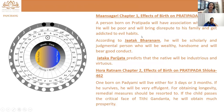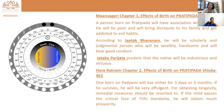Let us see what the classical texts have to say about a person born on Pratipada. Mangsari chapter 1 says a person born on Pratipada will have associations with rose — he will be poor, bring disrepute to his family, and get addicted to evil habits. Jatak Bharna says he will be scholarly, judgmental, wealthy, handsome, and will bear good conduct. Jatak Parijata predicts the native will be industrious and virtuous. Hora Ratnam chapter 2 says: one born on Padhyami will live either for three days or three months. If he survives, he will be very effulgent. For obtaining longevity, remedial measures should be restored to.